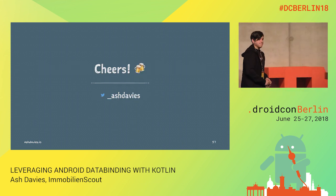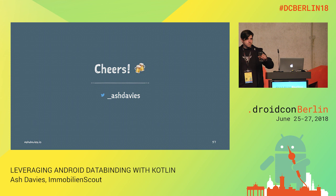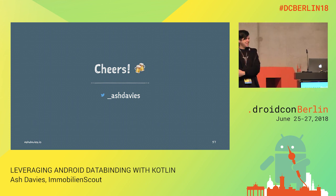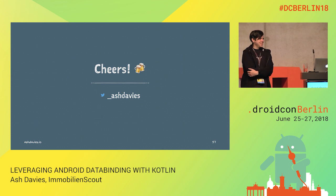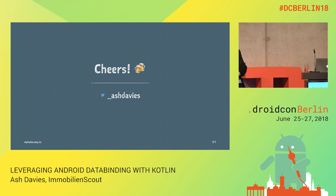Thanks. Questions? A question was raised: Kotlin delegated properties are great and powerful, but the speaker first used live data and then in the Kotlin delegated property didn't. Can you compare those two approaches?